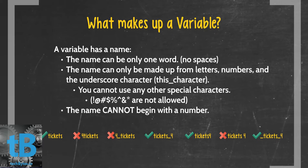What makes up a variable? A variable has a name. The name can be only one word, no spaces. The name can only be made up from letters, numbers, and the underscore character. You cannot use any other special characters in the creation of a Python variable name. And the name cannot begin with a number.